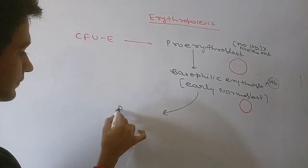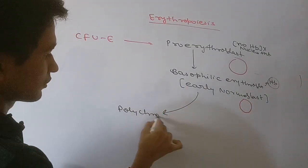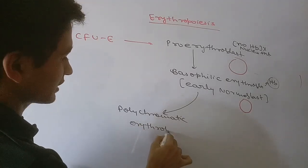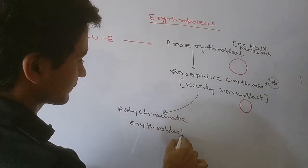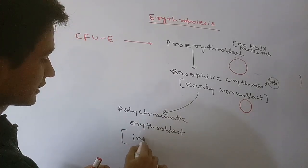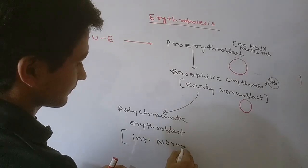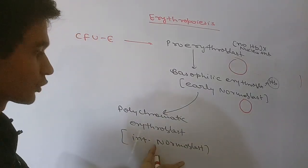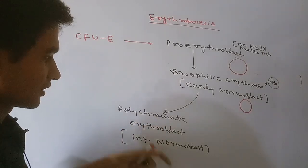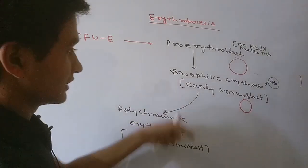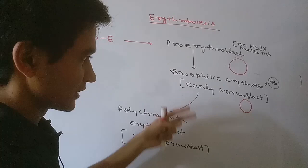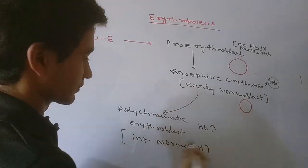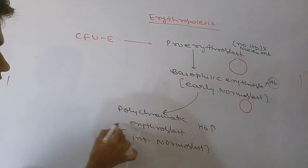From the basophilic erythroblast, the next stage is the polychromatic erythroblast, also known as the intermediate normoblast. Both terms refer to the same stage. In this stage, nucleus size is reduced further and hemoglobin amount is increased more.